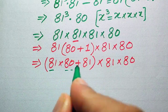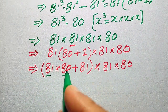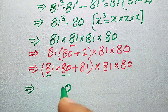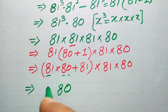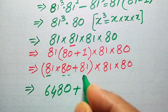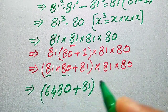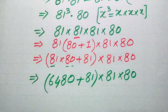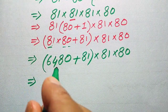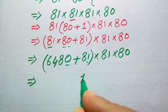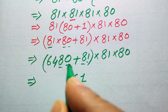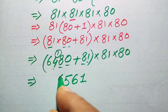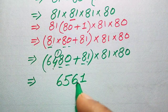We multiply digit by digit. 0 times this number is 0; 8 times 81 gives 648. Adding our values: 0 plus 1 is 1, 8 plus 8 is 16 so we write 6 carry 1, 4 plus 1 is 5, and we get 6. So 81 times 81 equals 6561, and this is then multiplied by 81 and by 80.